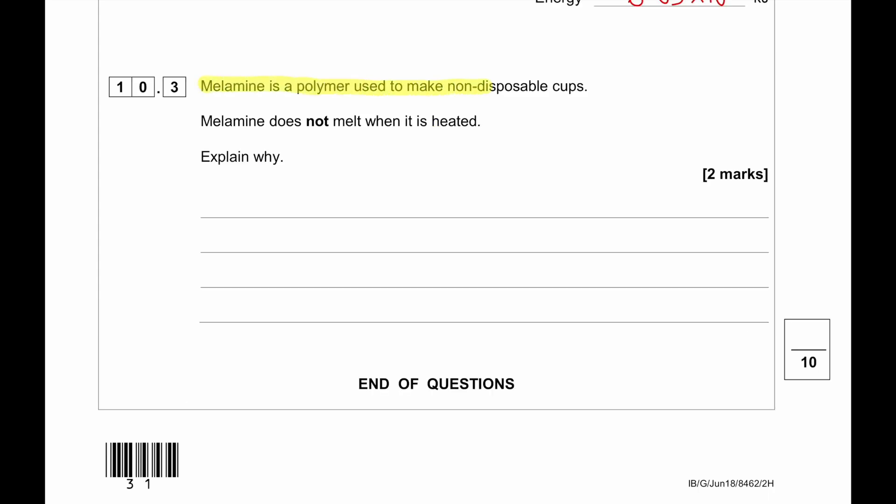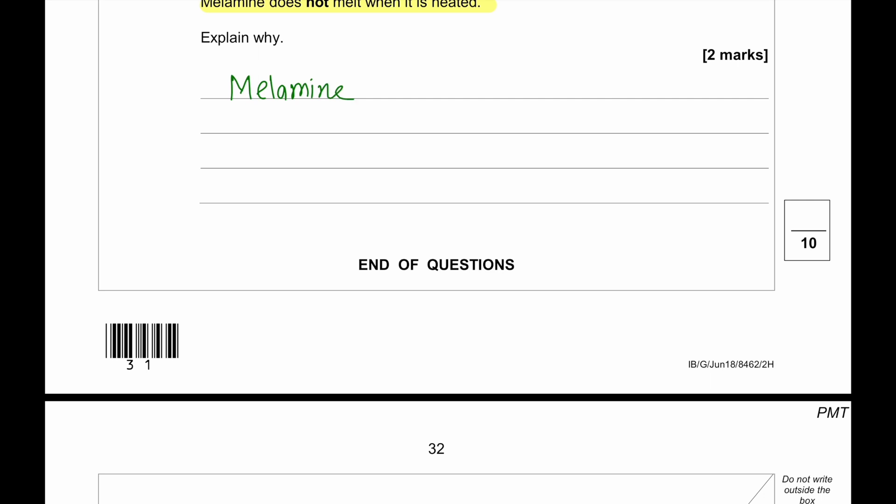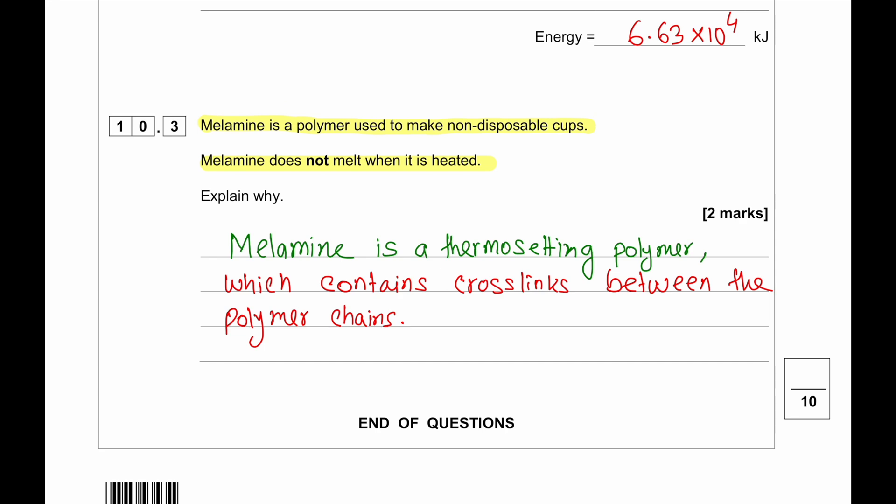Melamine is a polymer used to make non-disposable cups. Melamine does not melt when it is heated. So melamine is a thermosetting polymer which contains cross-links between the polymer chains. So it does not melt when heated. Alright guys, thank you for watching the video. See you in the next video. Bye.